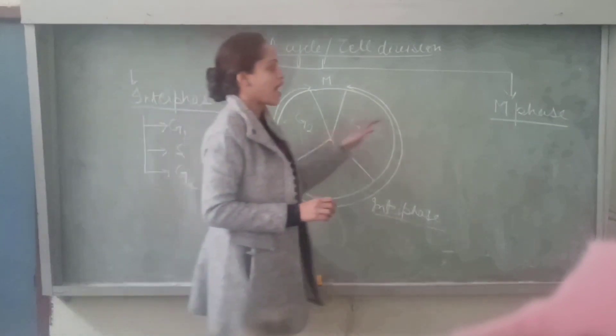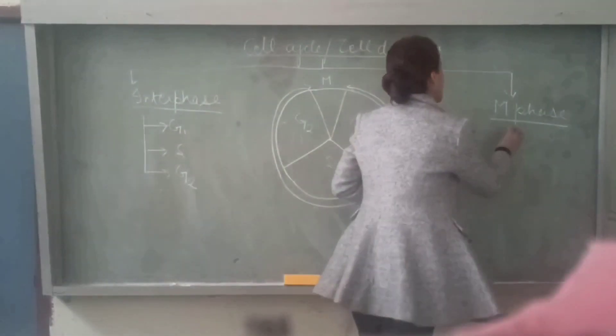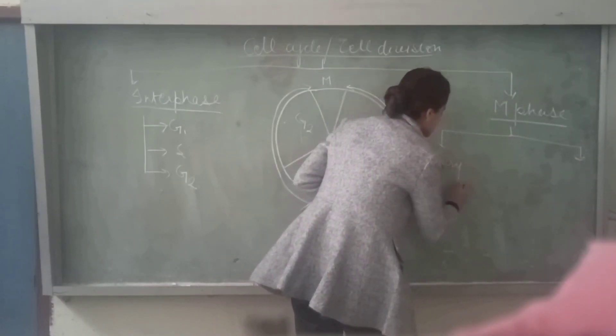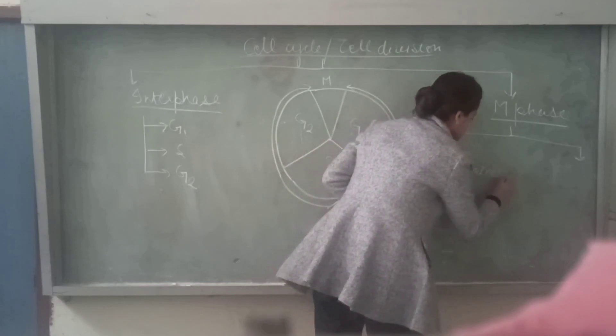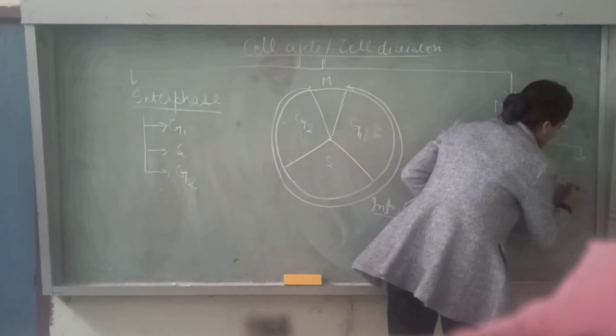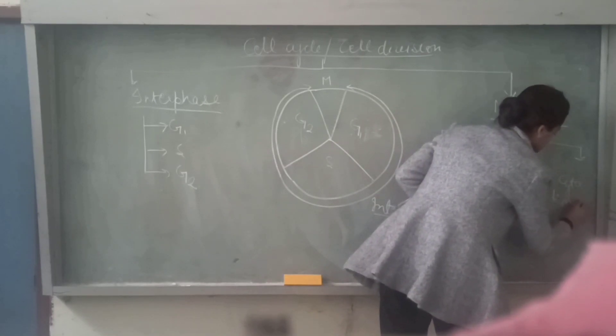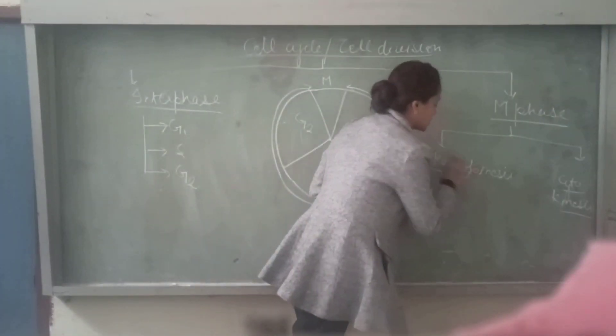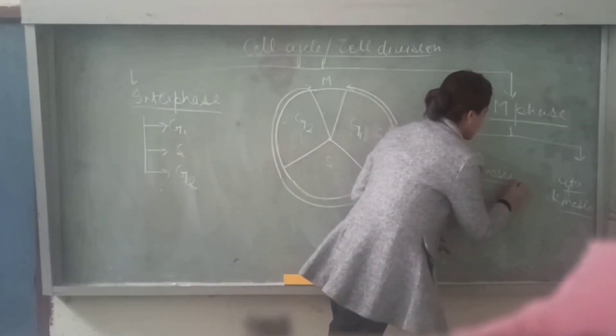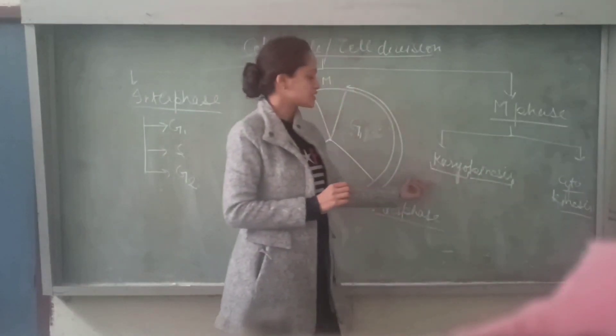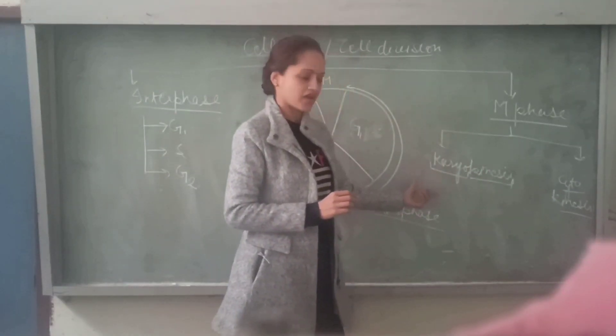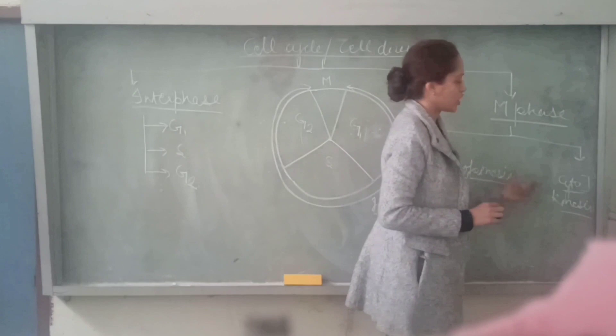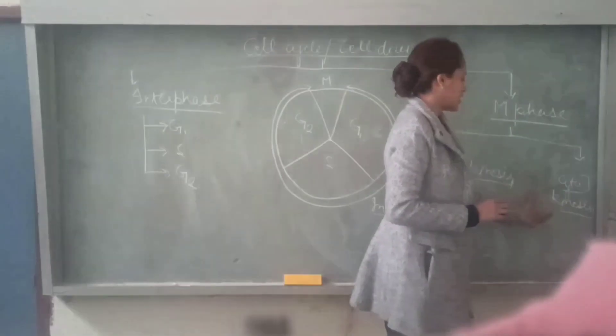Similarly, M phase also happens in two phases: karyokinesis and cytokinesis. Karyokinesis stands for nucleus and kinesis for division. So in karyokinesis, division of nucleus takes place. And after completing karyokinesis, the cell will enter cytokinesis. Cytokinesis stands for cytoplasm, so here the division of cytoplasm takes place.